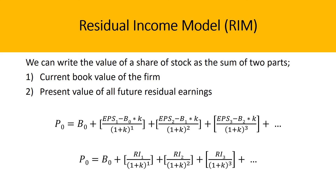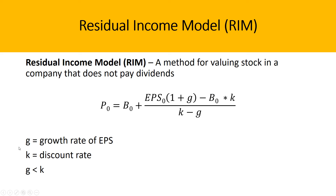However, if we make a very important assumption, we can simplify this formula even further. If we assume that EPS grows at a consistent rate forever, then the formula becomes: the book value in the base year, plus EPS in the base year times (1 plus the growth rate), minus the book value in the base year times the discount rate, all divided by the discount rate minus the growth rate. An important rule is that the growth rate cannot be higher than or equal to the discount rate, because that would produce a negative valuation, which is inaccurate.